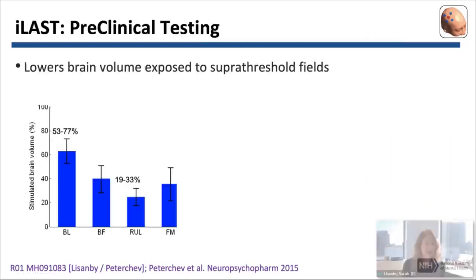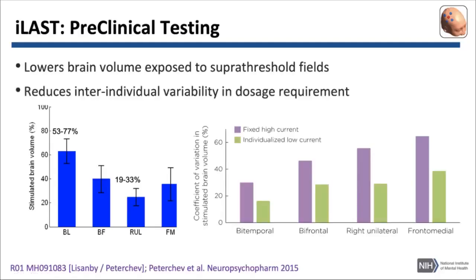In preclinical testing, we've demonstrated that we can use this pulse titration — which we call individualized low amplitude seizure therapy, or iLAST — and induce seizures reliably, stimulating with as low as 19 to 33 percent of the brain volume, closer to the focality of MST. We've also shown that by doing this individual pulse amplitude titration, we significantly reduce individual variability in dose requirement, as shown by lower coefficients of variation in the green bars compared to the conventional fixed high-amplitude approach in the purple bars.